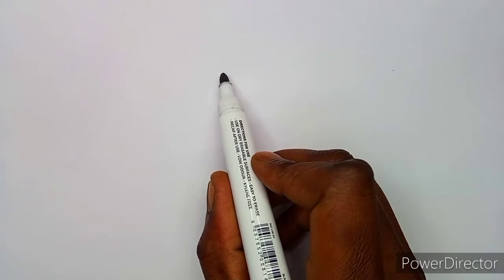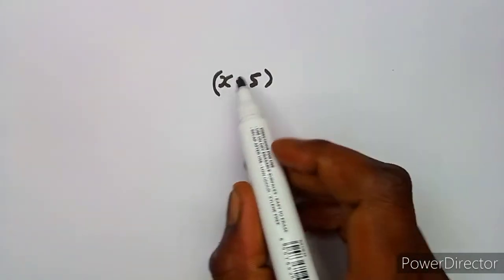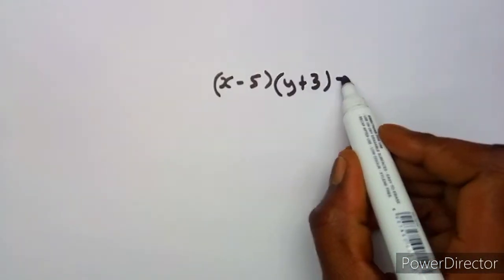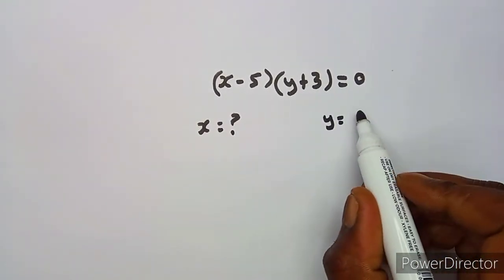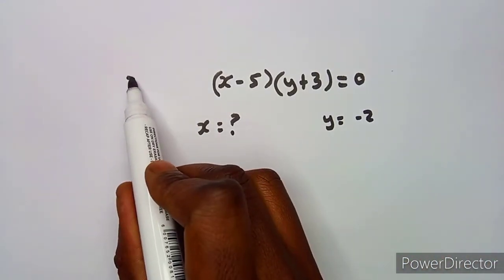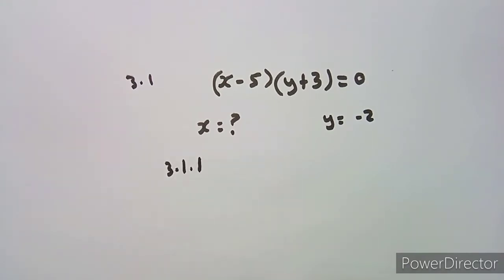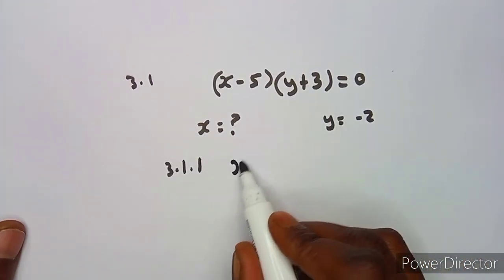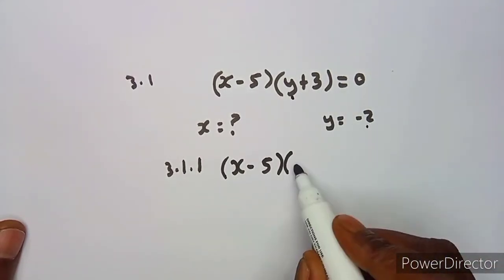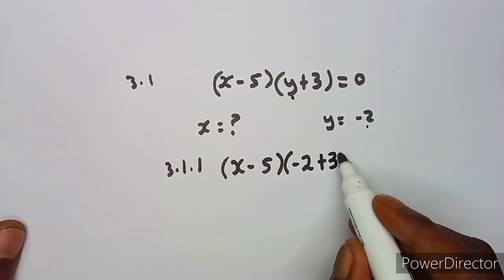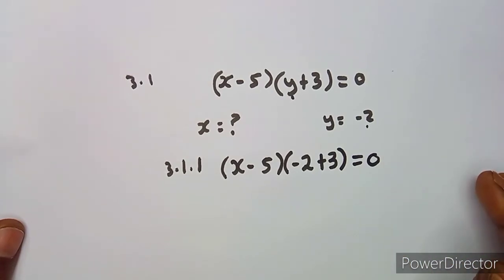For the first part, we are given two brackets: x minus five, and y plus three, all equal to zero. We need to find the value of x, and we are given that y is equivalent to negative two. This is more of a substitution — we substitute minus two in place of y, giving us x minus five, times negative two plus three, equal to zero.